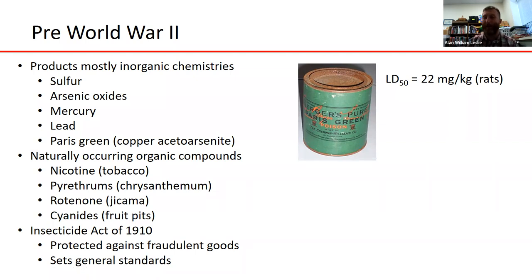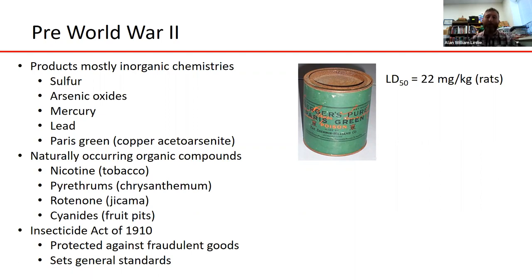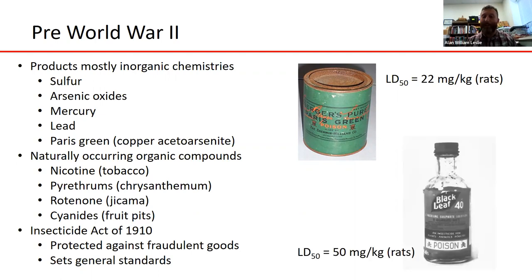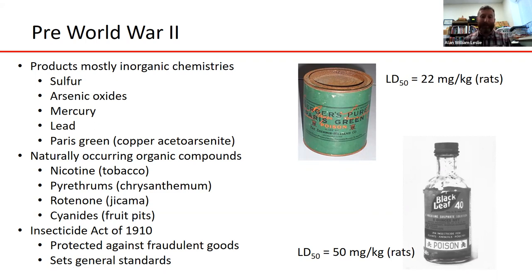There were also some naturally occurring organic compounds extracted from plants used as insecticides: nicotine from tobacco, natural pyrethrums from chrysanthemum plants, rotenone extracted from jicama, and cyanides naturally produced in fruit pits. These early botanical insecticides also tended to be relatively toxic. Black Leaf, which is nicotine sulfate isolated from tobacco plants, had an LD50 of only 50 milligrams per kilogram — on par with some inorganic chemistries. They worked really well on insects but were also very toxic to humans.